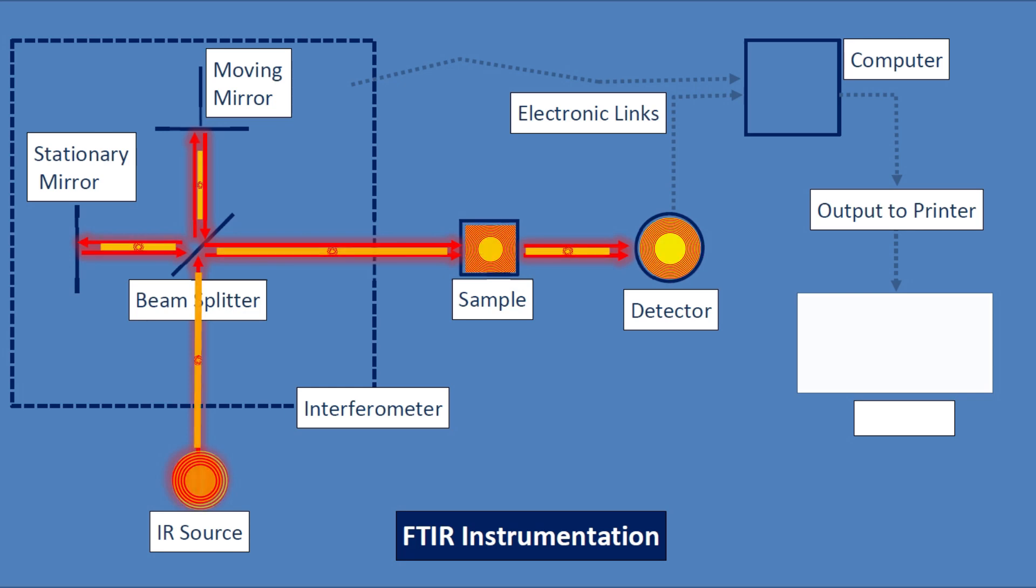When the radiation arrives at the sample, some frequencies are absorbed by the sample, and some are allowed to pass or be transmitted through the sample. When the transmitted radiation arrives at the detector, information about that radiation is decoded using a mathematical technique called a Fourier transformation. This provides information about the intensity of transmitted infrared radiation at each frequency separately.